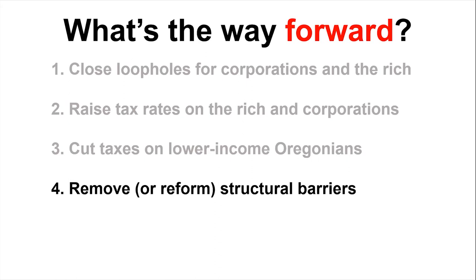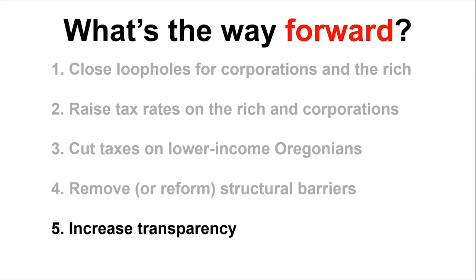The last strategy we recommend is increasing transparency in our tax system — shining a light on it so we can better understand how it is working and how to improve it. The place to start is with large corporations, requiring them to make public certain key tax and financial information so that we can better understand how the corporate income tax has declined so massively over the decades and how to reform it to work better for Oregonians.